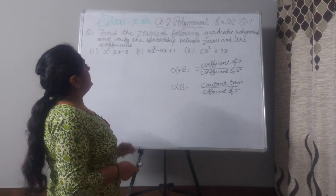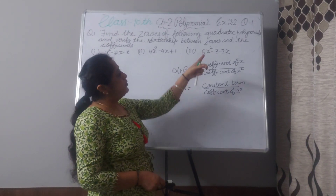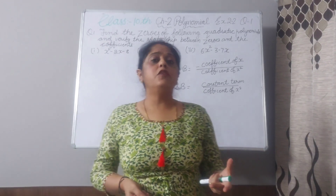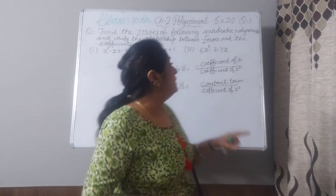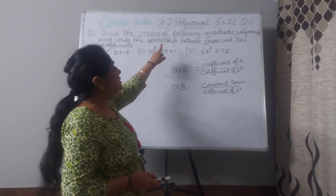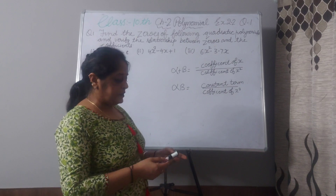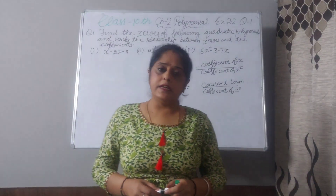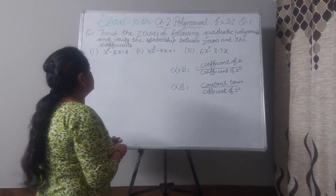Question number 1: find the zeros of the following quadratic polynomial. Do you know the meaning of quadratic? The degree of polynomial is 2 — that is called quadratic. And verify the relationship between the zeros and the coefficients. First we will solve this and then we verify the relation of zeros and coefficients.